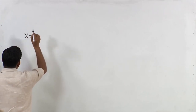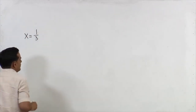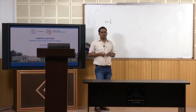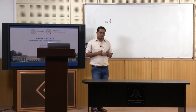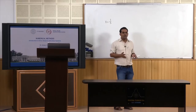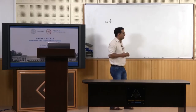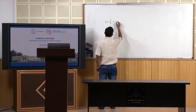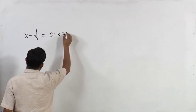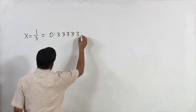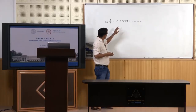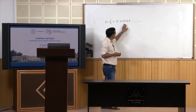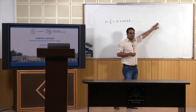Suppose I want to perform a numerical computation with a real number, let us say x equals to 1/3. However, computers generally store a finite number of digits. Every computer performs computation by taking a finite number of digits. This particular number in decimal format can be written with an infinite number of digits after the decimal. The computer cannot perform computation with such an infinitely long string of digits.